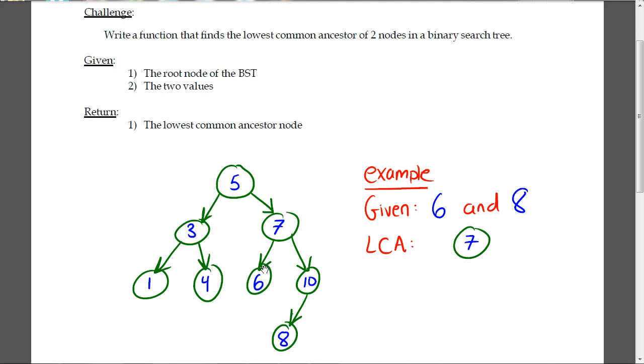I talked about the ancestors of 6, 5 and 7, and the ancestors of 8, 5, 7, 8, 5, 7, and 10. And then I said that the common ones were 5 and 7, and the lowest one was 7.